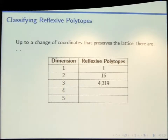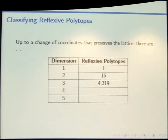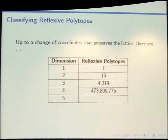I got really good at reciting the numbers in this table: 1, 16, 4,319. We have databases of all of these polytopes that ship with SAGE. And then there is also a database of the four-dimensional polytopes that was originally worked out by a couple of physicists and is now incorporated in SAGE — though maybe you have to call an optional package or something. It's a large package.